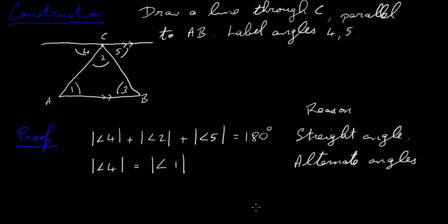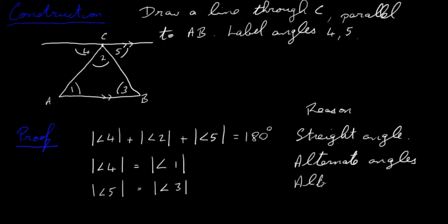Similarly, angle 5 is equal to angle 3 for the same reason — they are also alternate angles formed by the parallel lines and the transversal.